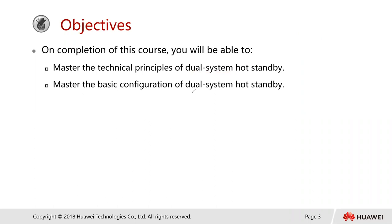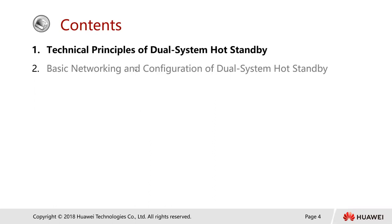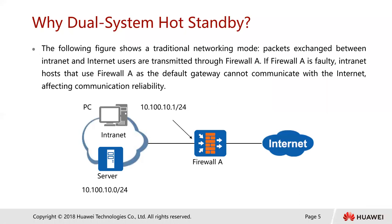We also want to master the basic configuration of dual system hot standby upon completion of this course. The following figures show a traditional networking mode: packets exchanged between intranet and internet users are usually transmitted through firewall A. If firewall A is faulty, the intranet hosts that use firewall A as a default gateway will not be able to communicate with the internet.